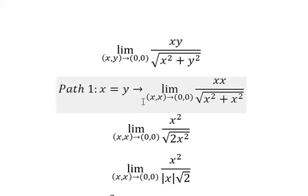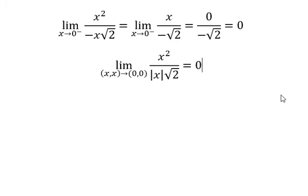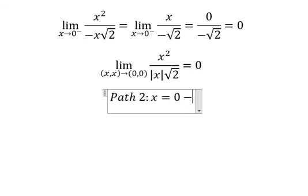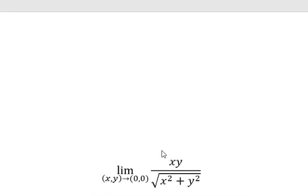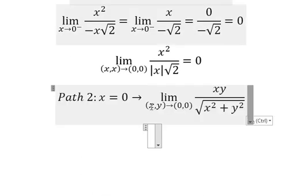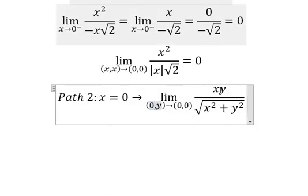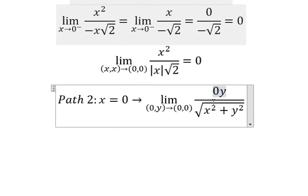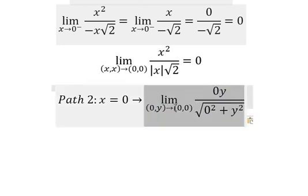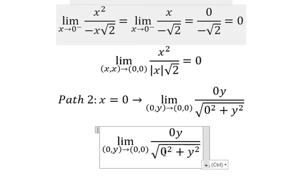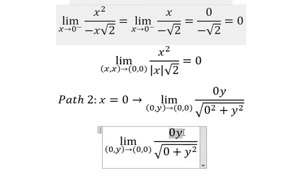Now let's go to path number two, which is about s equal to zero. We put zero in here, here, and here. So this one gives us zero, this one gives us zero, this one gives us zero — so the value of this one will be zero.